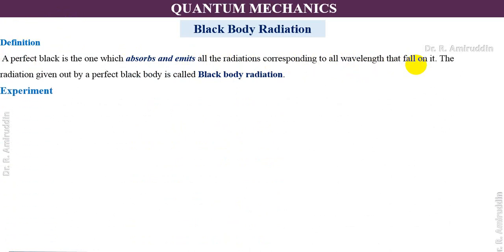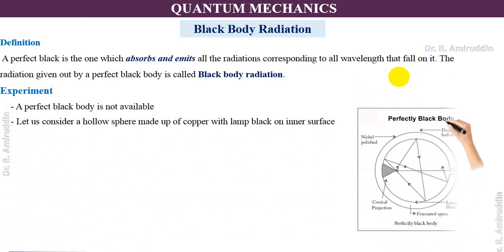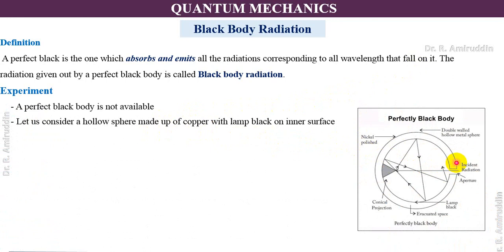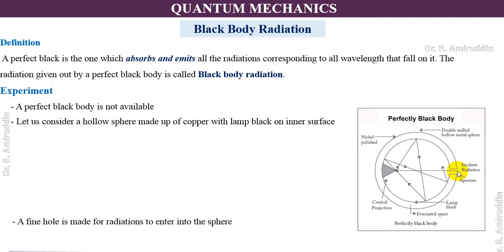Although a perfect blackbody is not available in practice, we consider a small experiment using a hollow sphere made of copper with lamp black coated on the inner surface. The inner surface of the hollow sphere is fully blackened. We then make a small hole at the rear end of this setup.